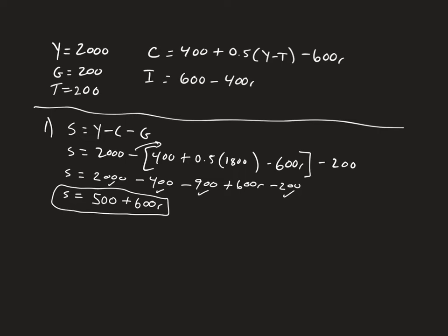The next thing that was asked to do was to solve for the goods market clearing interest rate. So that's when savings equals investment. So we take this 500 plus 600r and we make that equal to our investment function, which is 600 minus 400r.